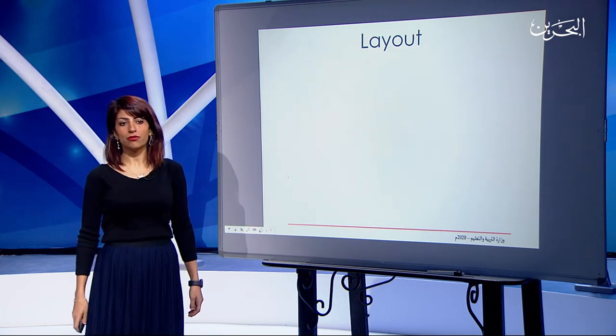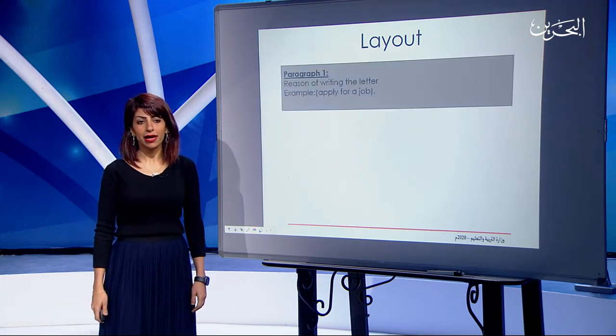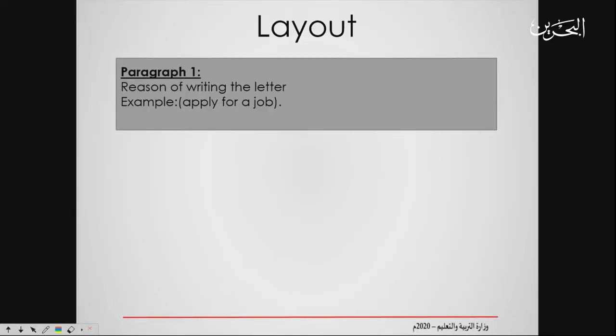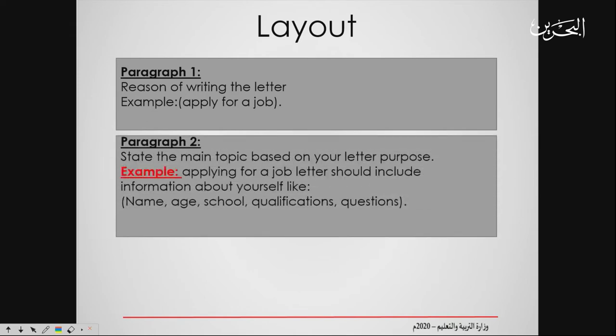Now let's move to the layout of writing a formal email. In the first paragraph, you have to state the reason for writing the email or letter. For example, if you want to apply for a job: 'I am writing this letter to apply for the job advertised on an online website.' Moving to the second paragraph, you have to state the main topic based on your letter's purpose.